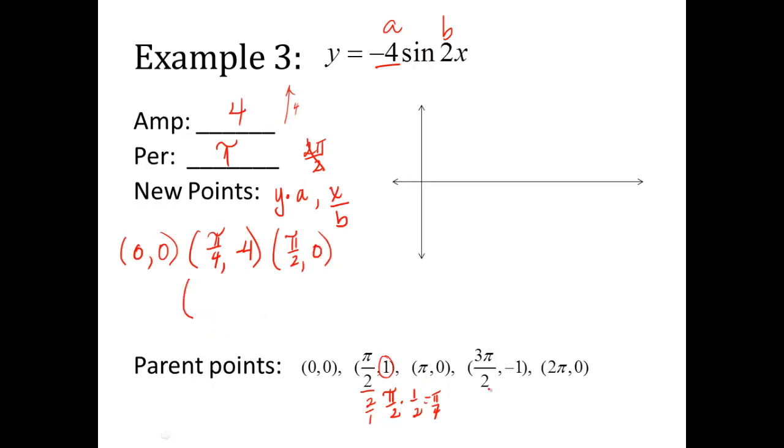Next point. 3 pi over 2 divided by 2. Keep a change and flip it. So that's going to be 3 fourths of pi. Y value is negative 1. Multiply it by negative 4. And I get a positive 4. Last point. 2 pi divided by 2 makes it just pi. And then 0 times negative 4 is still 0.